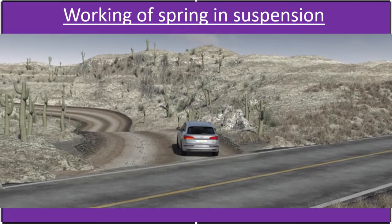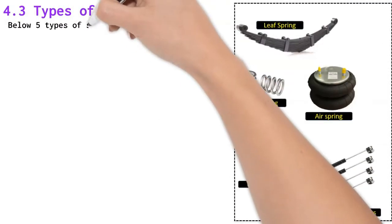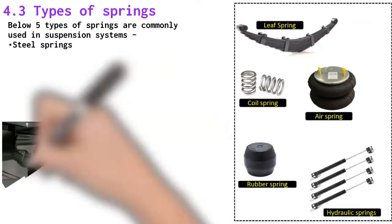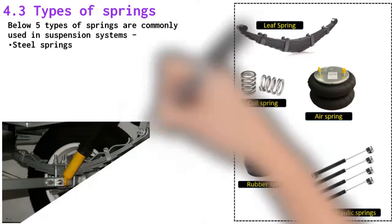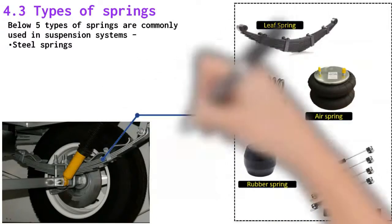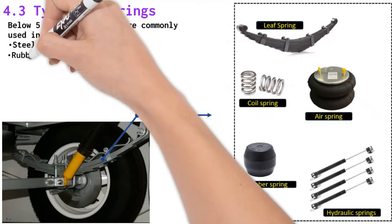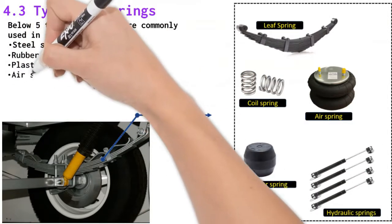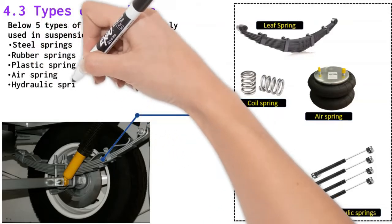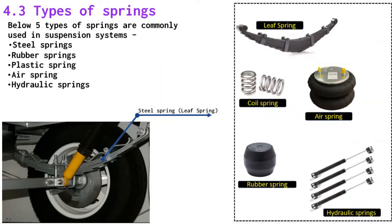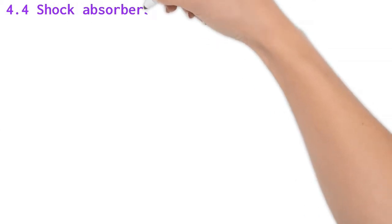Five types of springs are commonly used in suspension systems: steel springs — which include leaf springs, coil springs, and torsion bars, commonly seen in cars and trucks — rubber springs, plastic springs, air springs, and hydraulic springs.